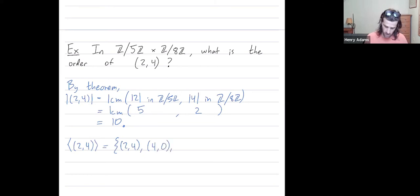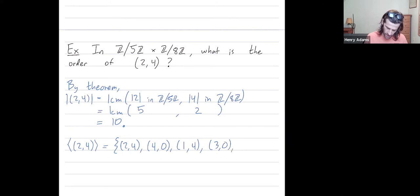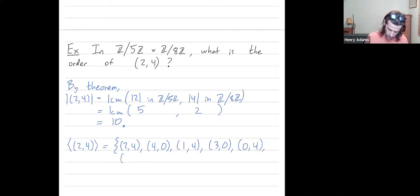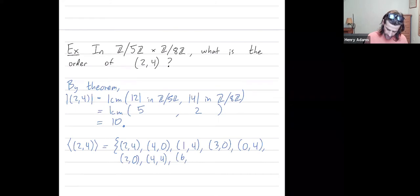Add (2,4) to get (6,4), but 6 is 1 in Z mod 5Z, so (1,4). Add (2,4) to get (3,8), which is (3,0). Add (2,4) to get (5,4), which is (0,4) — we're at zero in one coordinate but not the other, so we keep going. Add (2,4) to get (2,8), which is (2,0). Add (2,4) to get (4,4). Add (2,4) to get (6,8), which is (1,0). Add (2,4) to get (3,4). And finally add (2,4) to get (5,8), which is (0,0) in Z mod 5Z × Z mod 8Z.